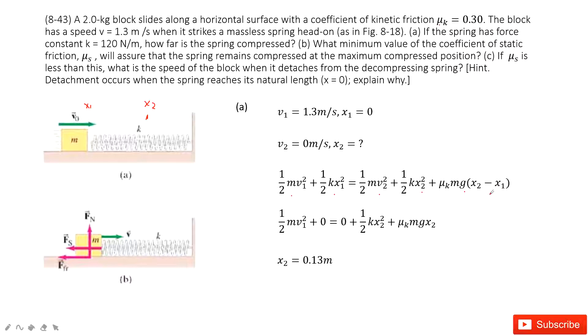Now we input the known quantities x1 and v2. So this term, this term, this term becomes 0. And in this equation, we can very easily find x2 because the mass v1, k, g, μk are given. So you can solve this equation quickly and get x2 equals 0.13 m.